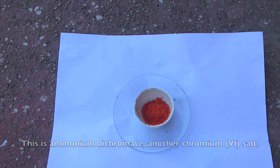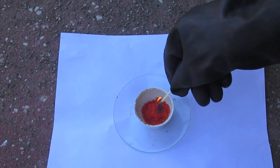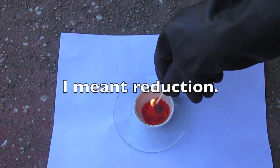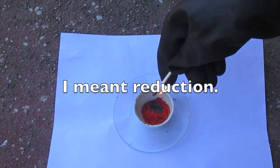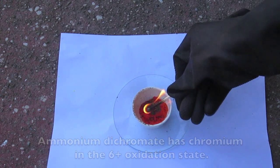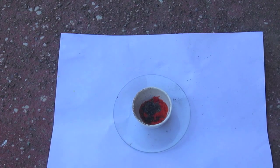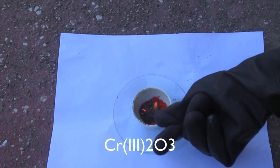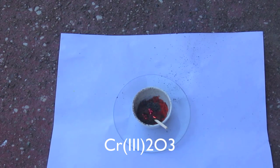Chromium in the plus six oxidation state is extremely unstable and is susceptible to easy decomposition. Here is ammonium dichromate. When I heat it up with a match, you'll see that it decomposes to form green chromium dichromium trioxide featuring chromium in the three plus oxidation state and it also forms water and nitrogen gas.